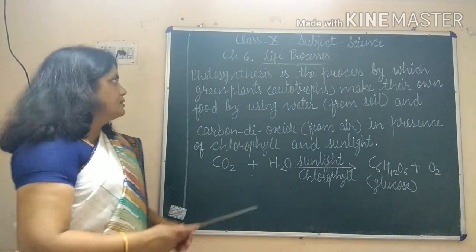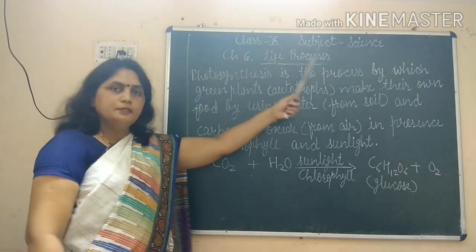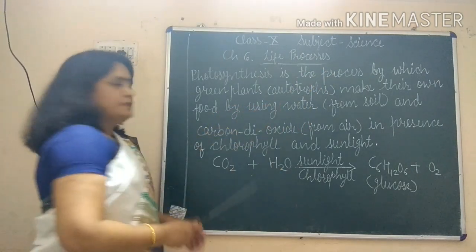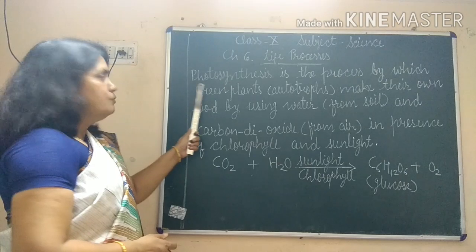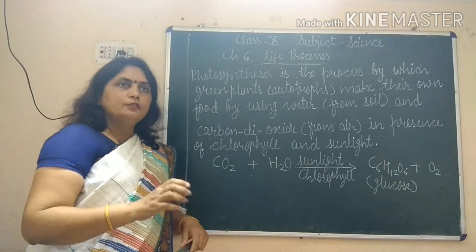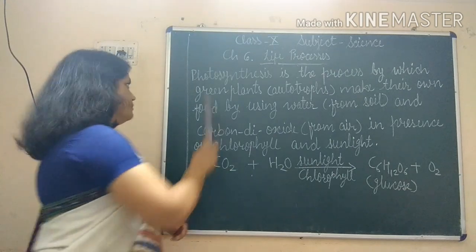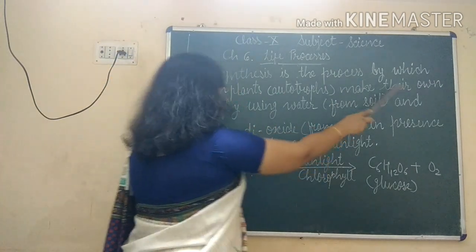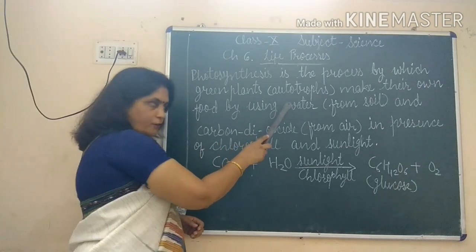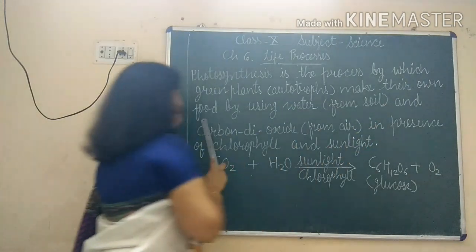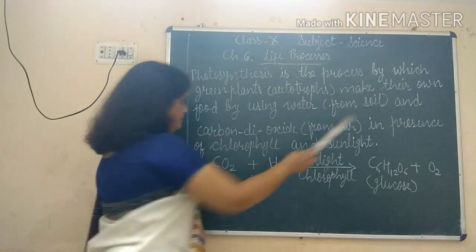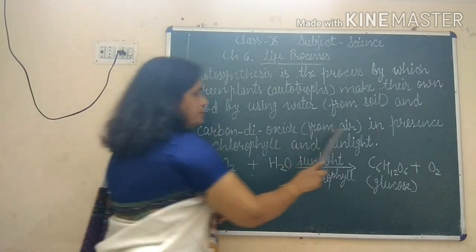Welcome to Anita's online classes, class 10th, subject science, chapter 6 - life processes. Today we are going to talk about photosynthesis, that is, nutrition in green plants. Photosynthesis is the process by which green plants, that is autotrophs, make their own food by using water from soil and carbon dioxide from air.